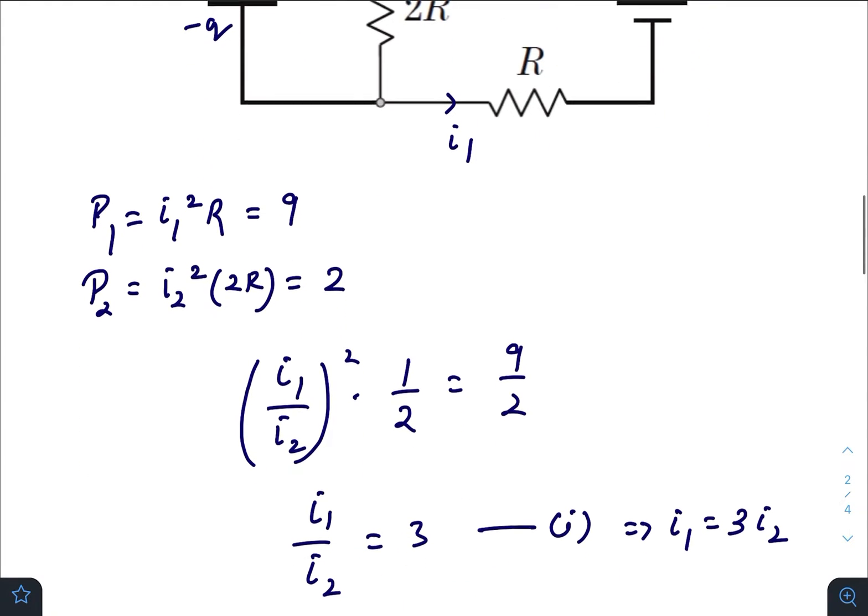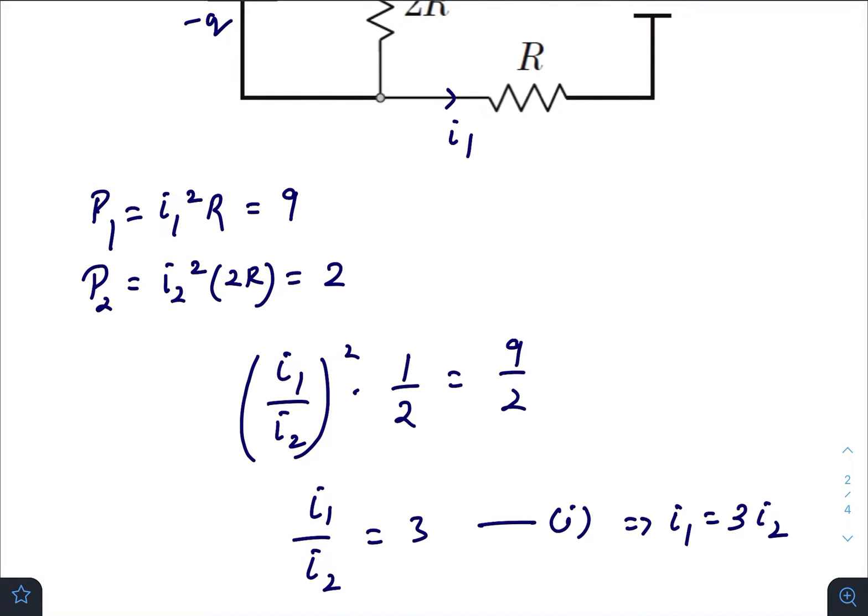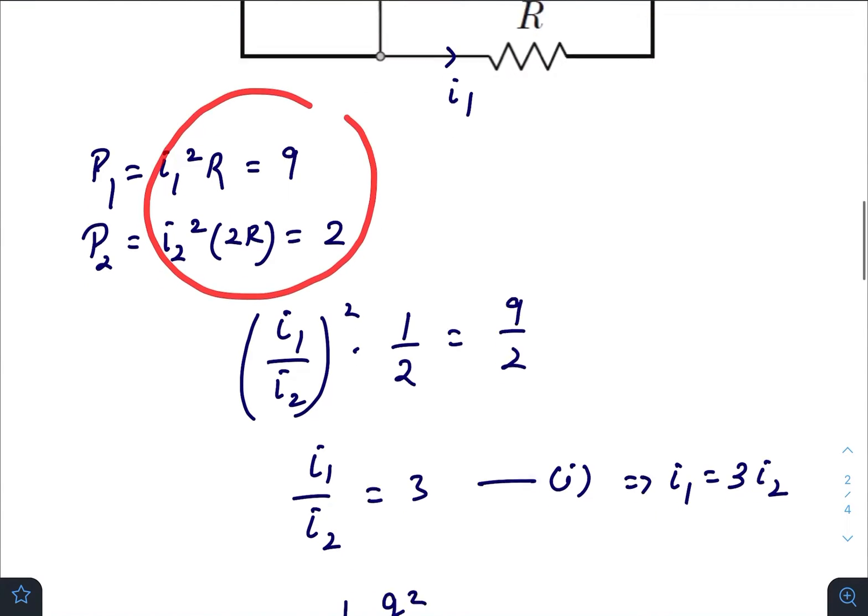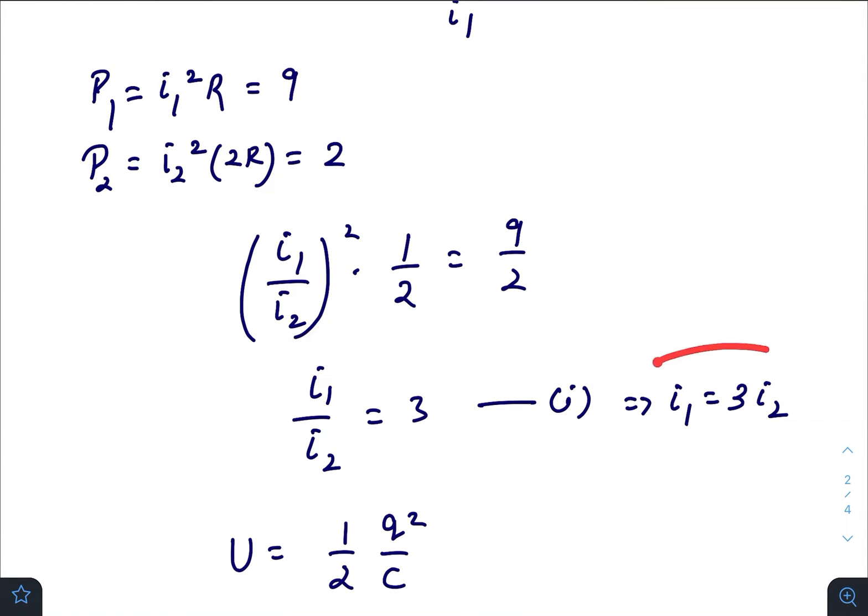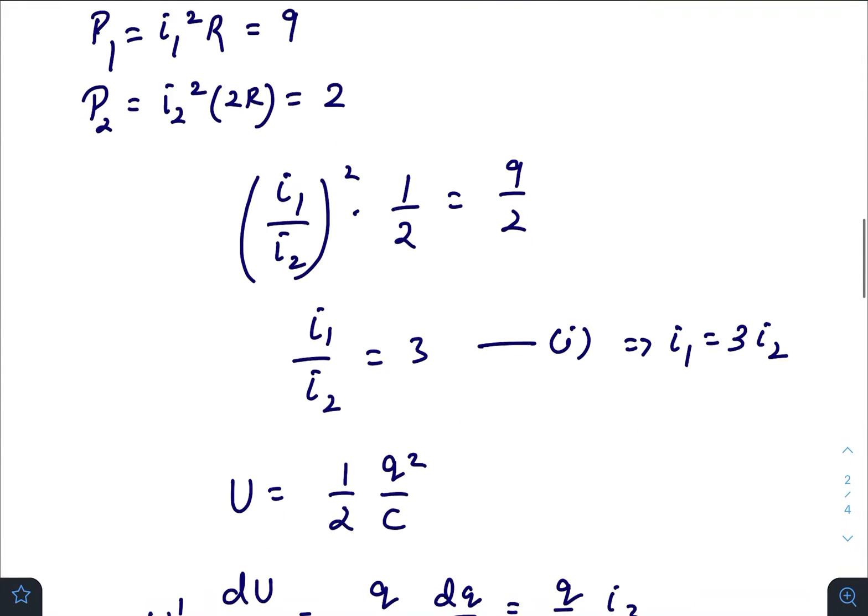According to the question, power dissipated in R, that is I₁²R, is 9 watts. Similarly, power dissipated in 2R is 2 watts. Dividing these two expressions, we get I₁/I₂ = 3, or I₁ = 3I₂.